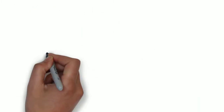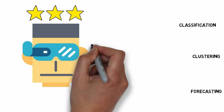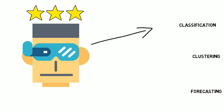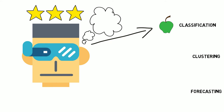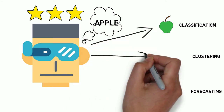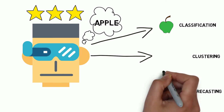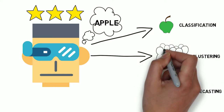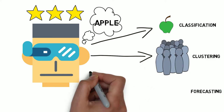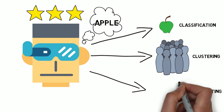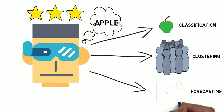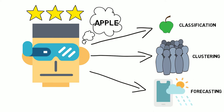Classification is the action or process of classifying something according to its characteristics. Clustering is a process of grouping similar things based on appearance or behavior. Forecasting is the estimation of future events based on historic events.